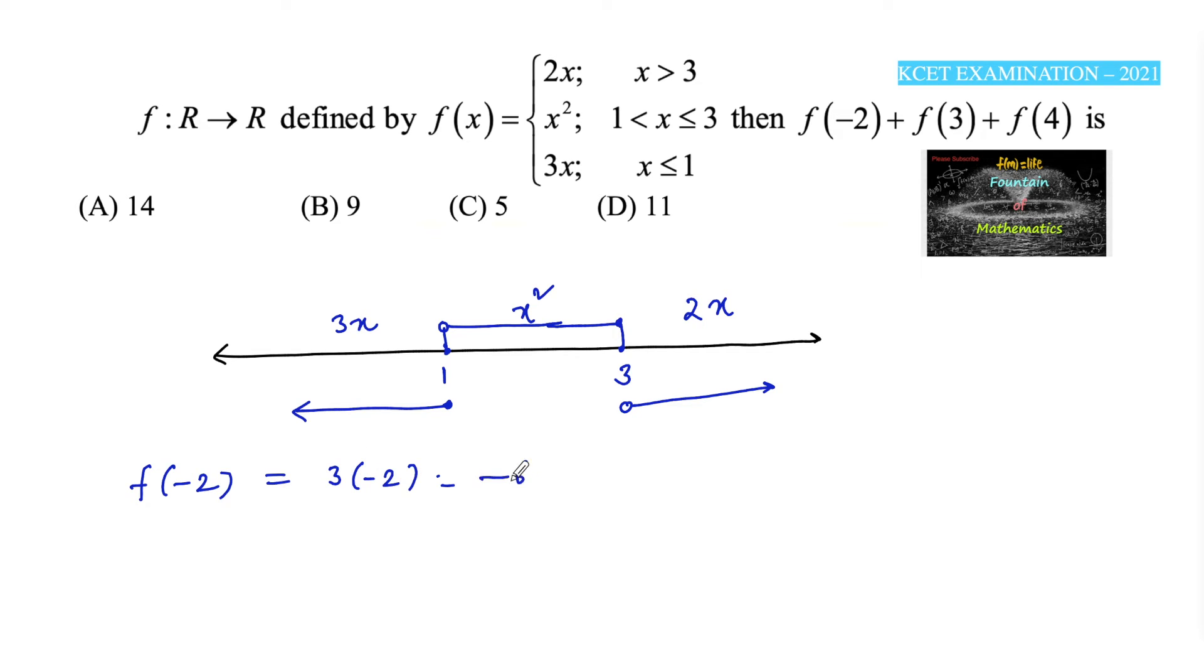f(3) - since it's including 3, we use x squared. That's 3 squared, which is 9. f(4) is above 3, so we use 2x. That's 2 times 4, which equals 8.